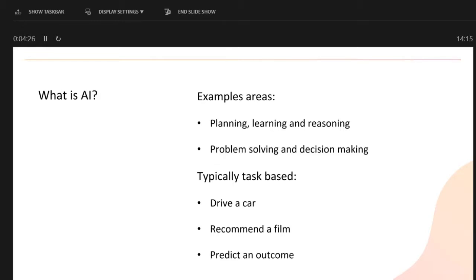AI now is typically doing a task. Driving a car is a very complicated task when you break it down, but it is still a task — teaching a machine to do that. Recommendation is another one: previously it was reviews or word of mouth, but now Netflix or Amazon will recommend stuff you like and show a percentage match of how close a programme is to your preferences — it's learning about you as you watch. And then predicting outcomes where you've got very complex, many-variable scenarios.